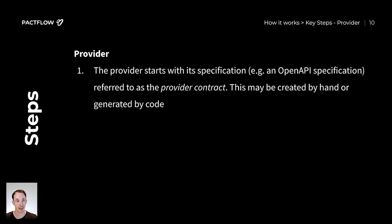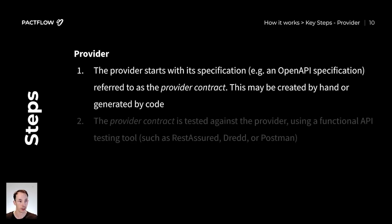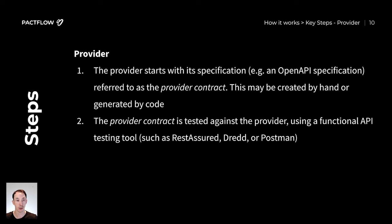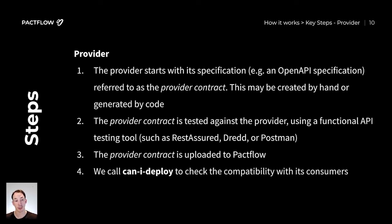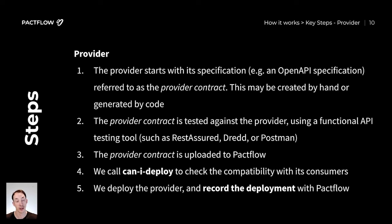Similarly, on the provider side, we start with the provider contract — for example, an OpenAPI document — which can be created by hand or generated by code. If it was generated by code, we can skip the verification step because we know the code is a reliable representation of what the contract specifies. If the contract has been manually created or edited, we need to verify that the provider is compatible with the OpenAPI spec using tools like REST Assured, Dredd, Postman, or any other functional testing tool. The provider contract is then uploaded to PactFlow, and as before we call can-I-deploy on the provider side to make sure it's compatible with its consumers — for example, checking that the current provider contract is compatible with all consumers of that provider in production. Lastly, if that passes, we deploy the provider and record that deployment with PactFlow.